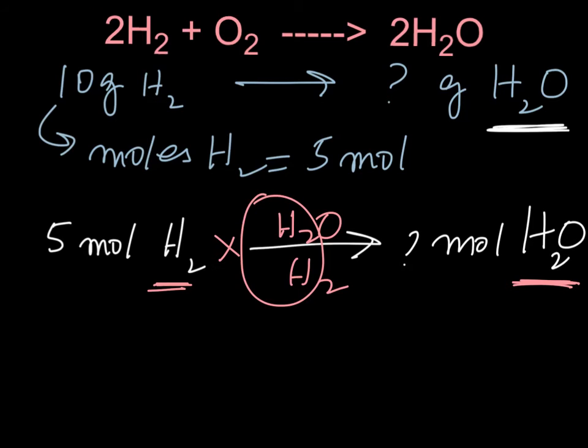And then we look at the balanced equation, we look at H2O here and H2 and look at the coefficients, what is in front of them. So in both cases we have 2H2O and 2H2. So this H2 will cancel with this H2, this 2 will cancel with this 2, and we are left with 2 times 1 is 5 moles of H2O. So basically what that tells you is 5 moles of H2 will produce 5 moles of H2O.